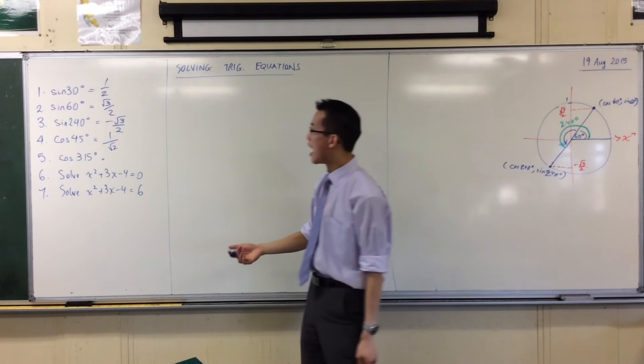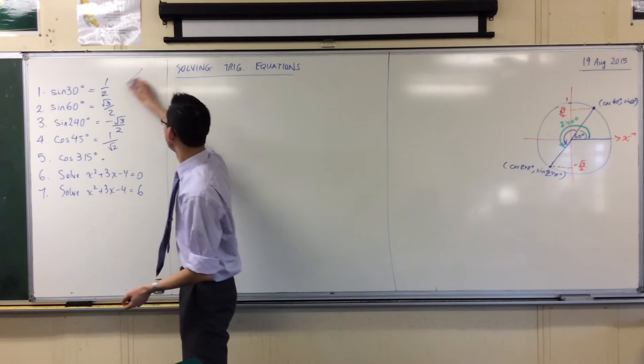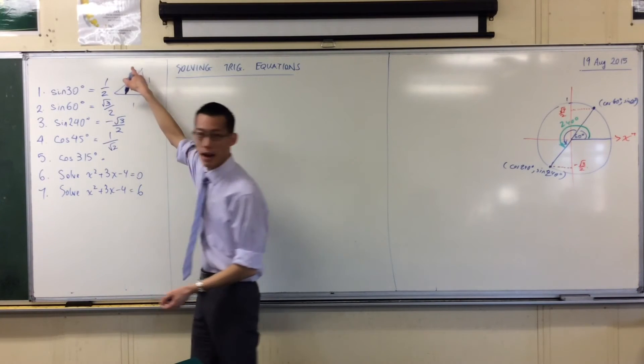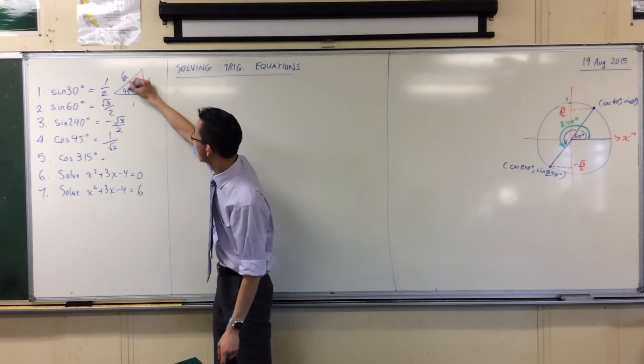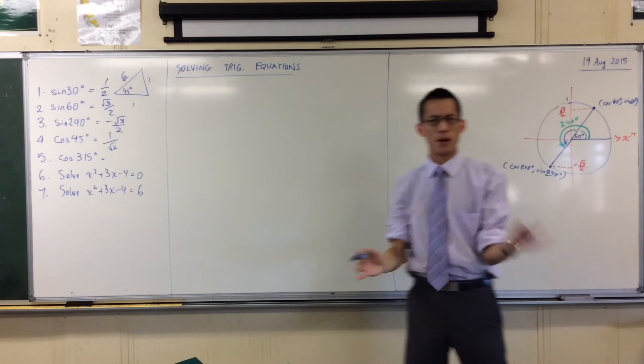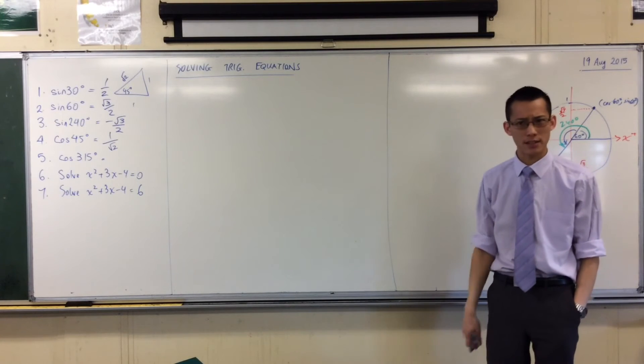That'll give you a shot. Or you can draw that triangle. This guy, 1, 1, and Pythagoras will tell you what the hypotenuse is, root 2. So very close, but always remember, you've got plenty of things to help you check.